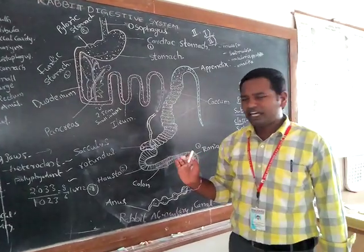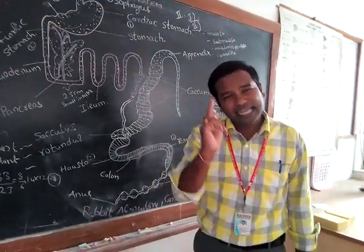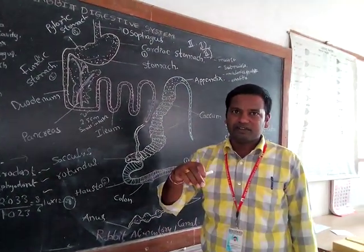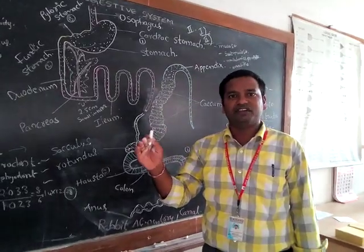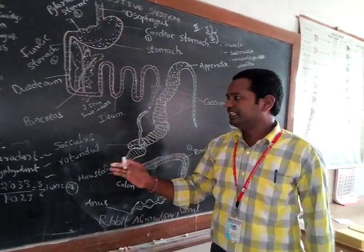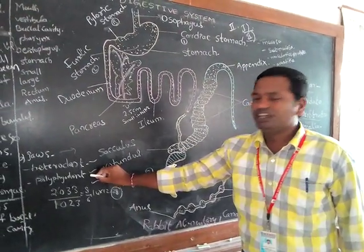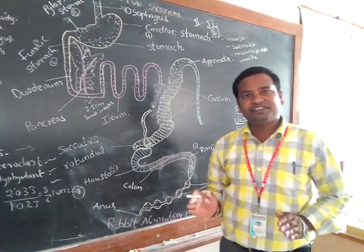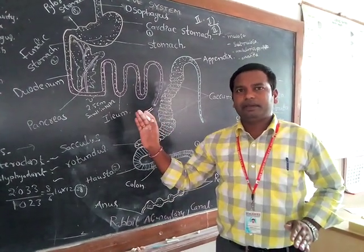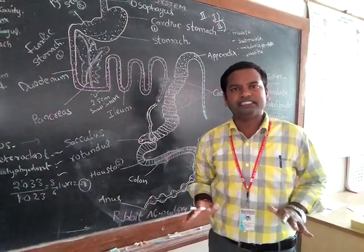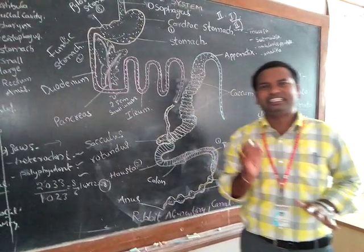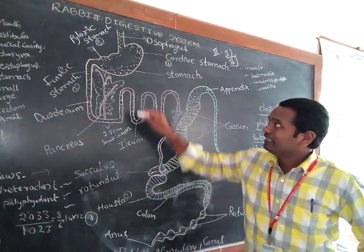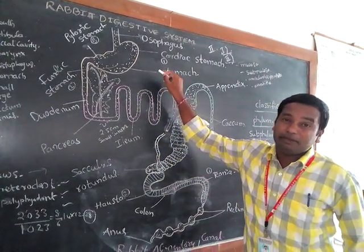The palate is the roof of the buccal cavity and forms its anterior part. The jaws hold the arrangement of teeth. The teeth are heterodont and diphyodont. Heterodont means different types of teeth are present — for example, in human beings: incisors, canines, premolars, and molars. But rabbit is a herbivorous animal.